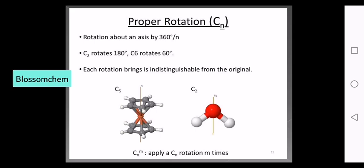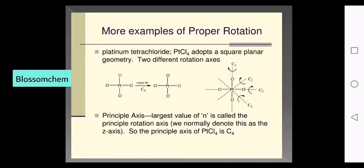We rotate C2 to 180 degrees, resulting in an indistinguishable orientation. This is another symmetry operation. Here are more examples of proper rotation.